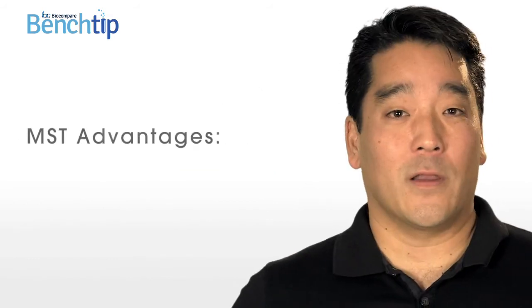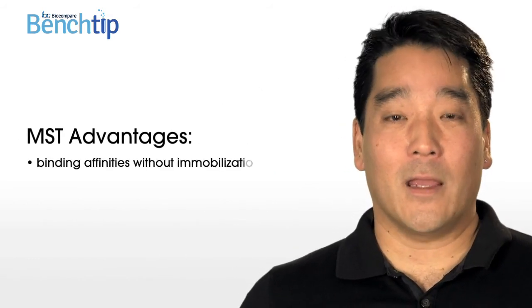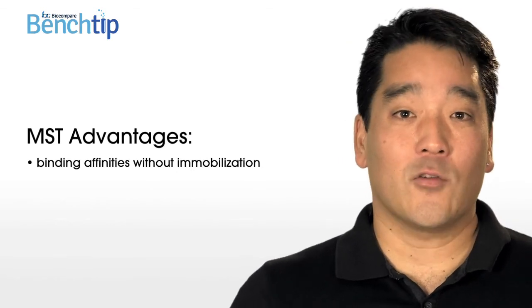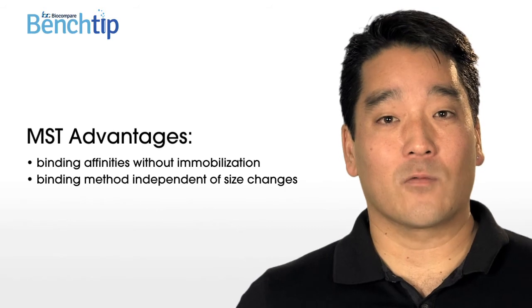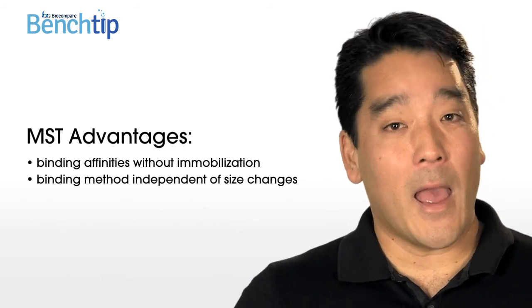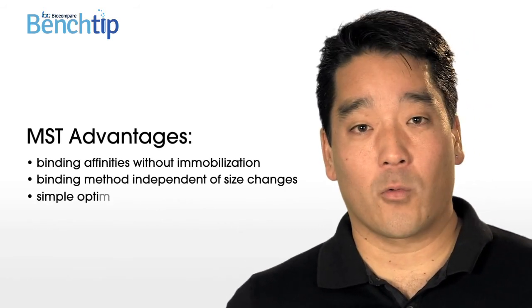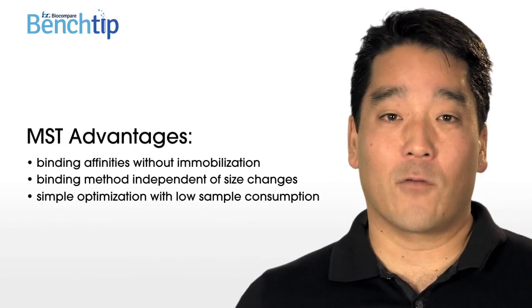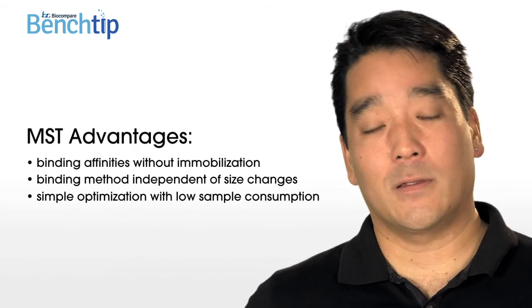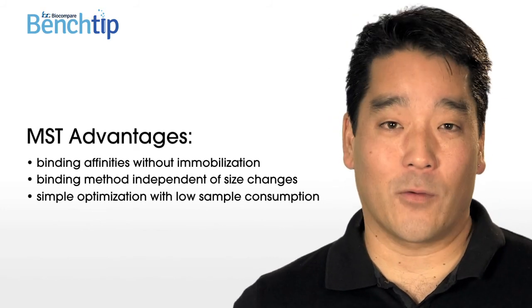A major advantage of MST is that you can measure binding affinities without any immobilization. And you can investigate binding between virtually any type of molecule using a method that doesn't rely on size changes. Assay optimization is rapid and straightforward with low sample consumption compared to other biophysical methods. This makes MST a versatile, fast, and accurate way to study and quantify biomolecular interactions.